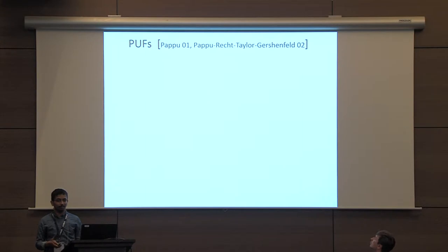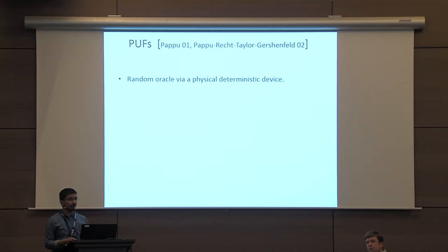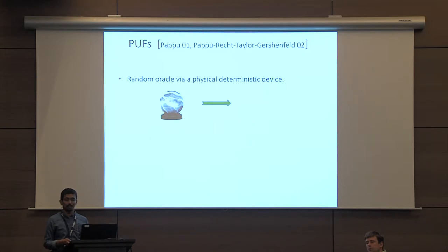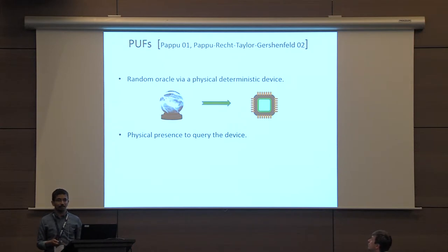What are PUFs? PUFs were introduced by Pappu et al. You can think of a PUF as a physical deterministic device that is somewhat like a random oracle. A PUF is a manifestation of a random oracle such that if you query a PUF with any input, the output that you get appears to be like a truly uniformly random string. And since it's a physical device, in order to evaluate it, you need to have the device in your possession.